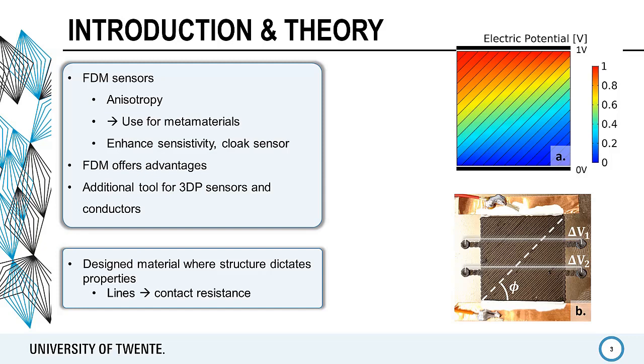The top figure shows the voltage distribution in a metamaterial sample with anisotropic conduction, yielding a skewing of the voltage distribution.